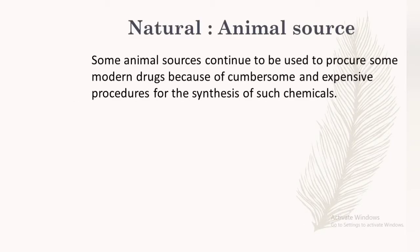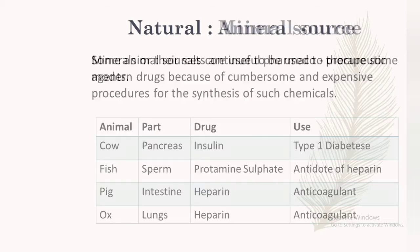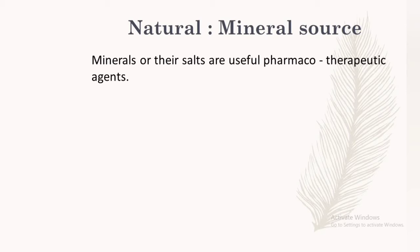Some animal sources continue to be used to procure modern drugs because of the complex and expensive procedures required for their synthesis. Examples include insulin from the pancreas of cows, used in type 1 diabetes mellitus; protamine sulfate from the sperm of fish, which is the antidote of heparin; heparin from the intestine of pigs, used as an anticoagulant; and heparin also from the lungs of ox, used as an anticoagulant.